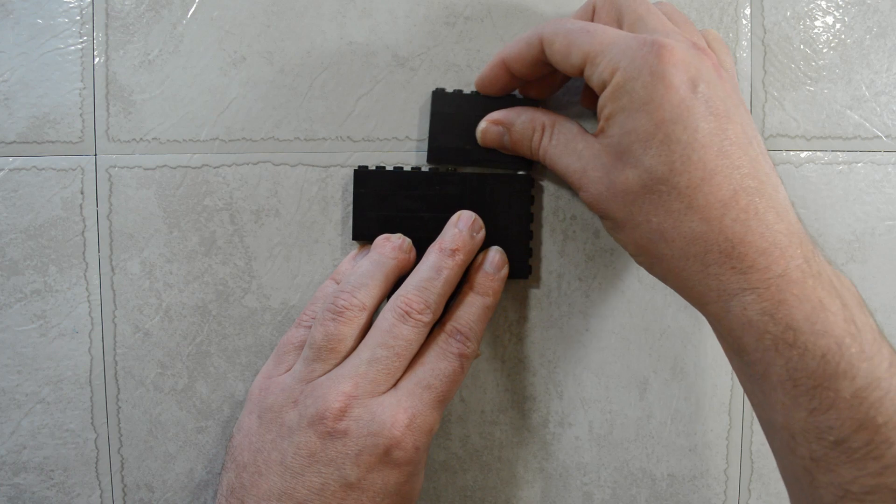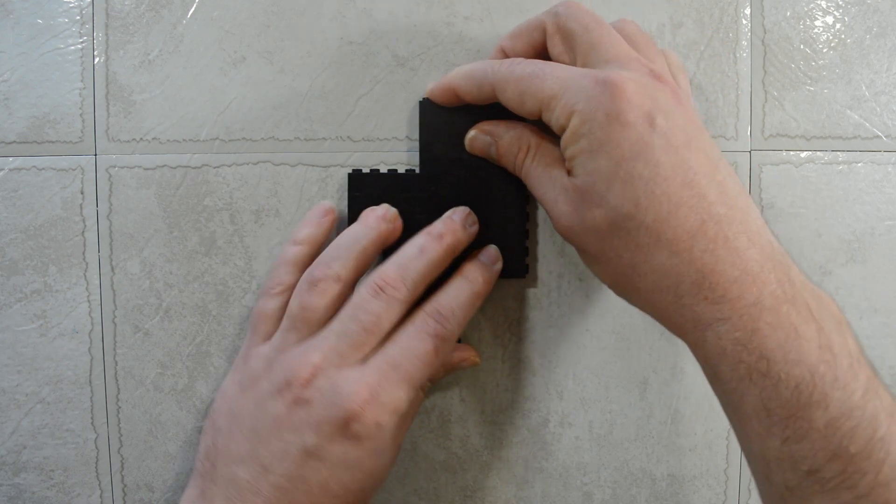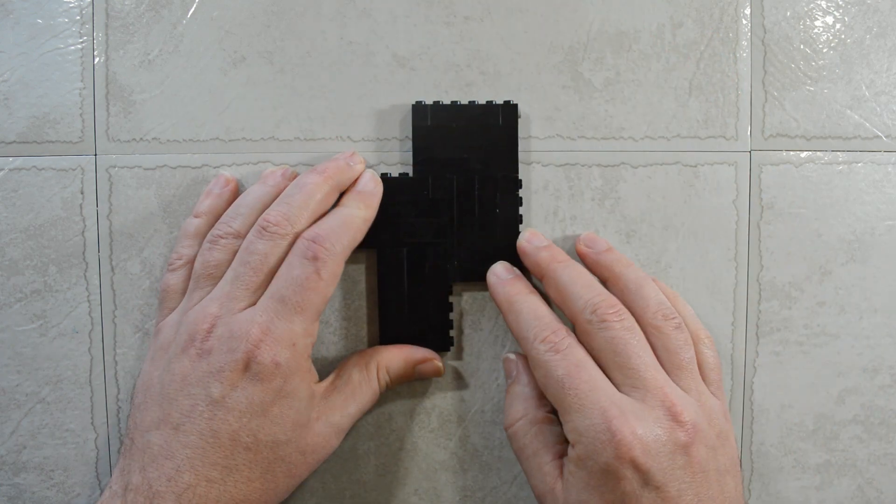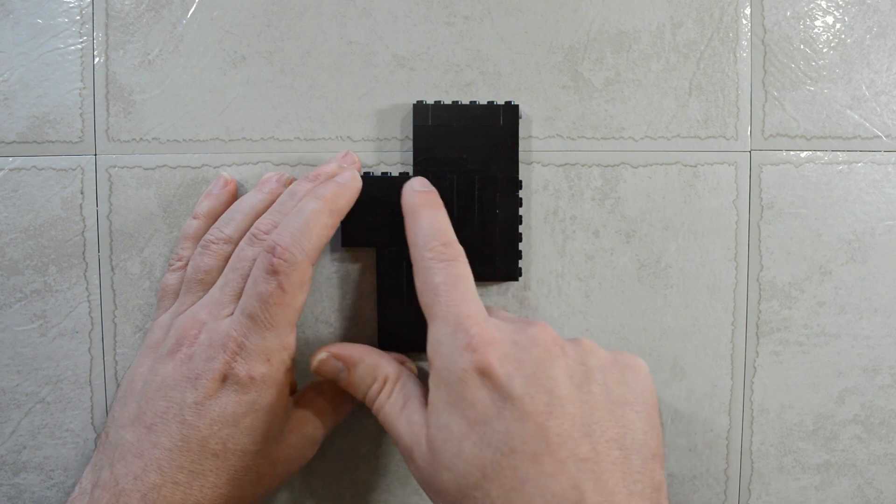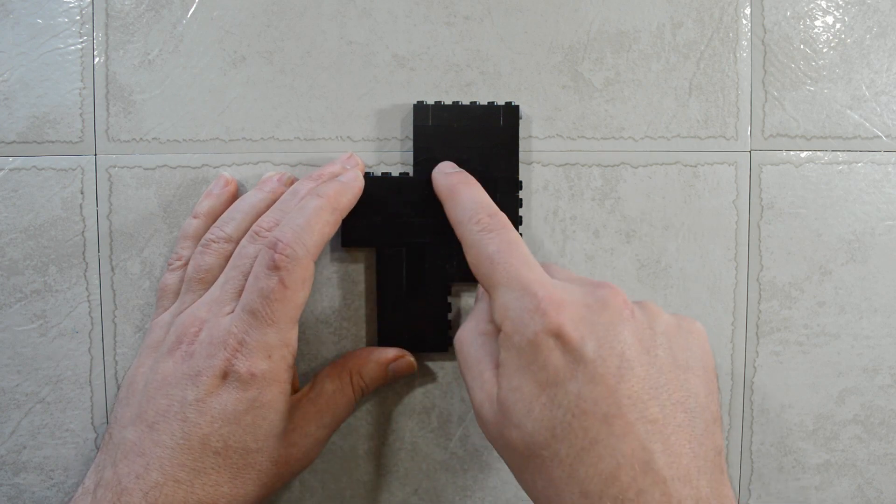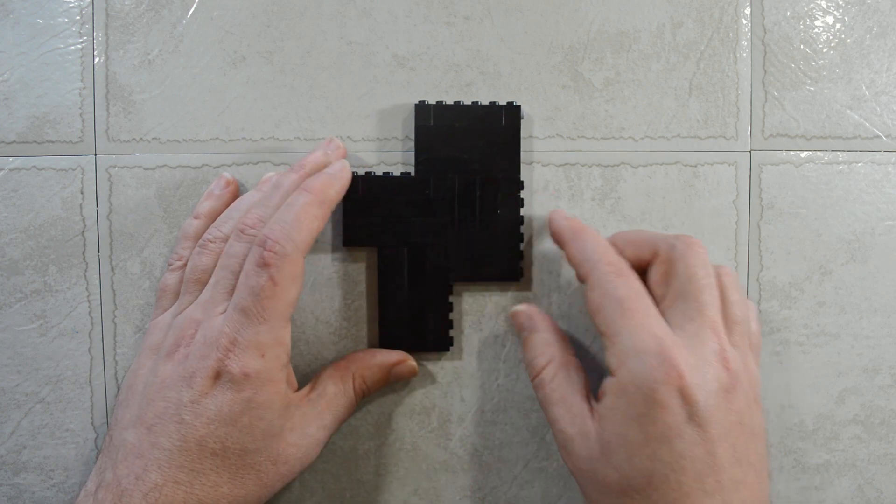and now this stud on the top lines up with these studs. We take our next element, we do the same thing, and you can already start to see a zigzag pattern forming in our bricks.